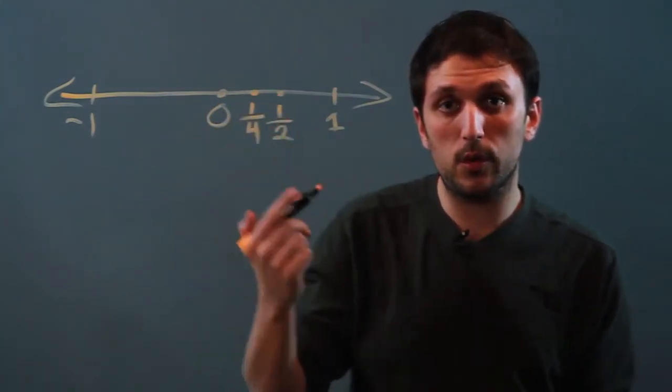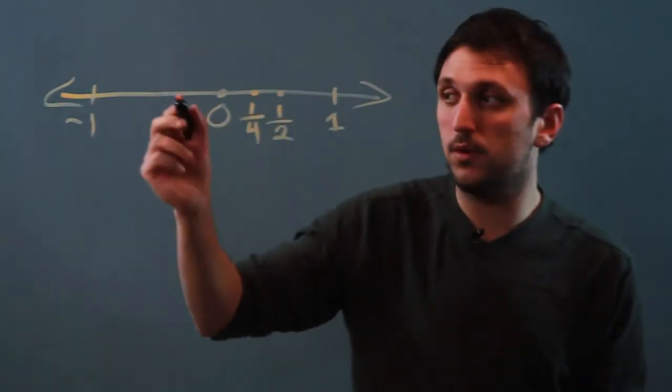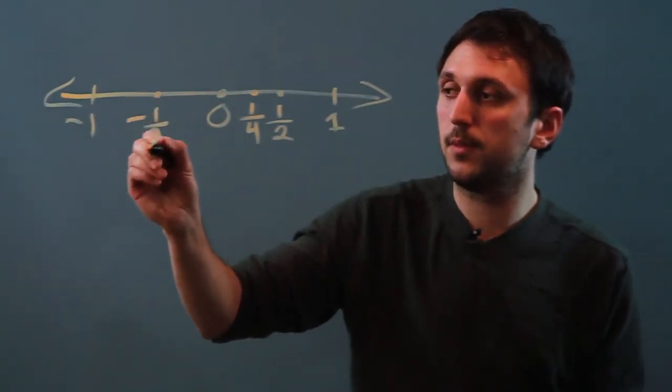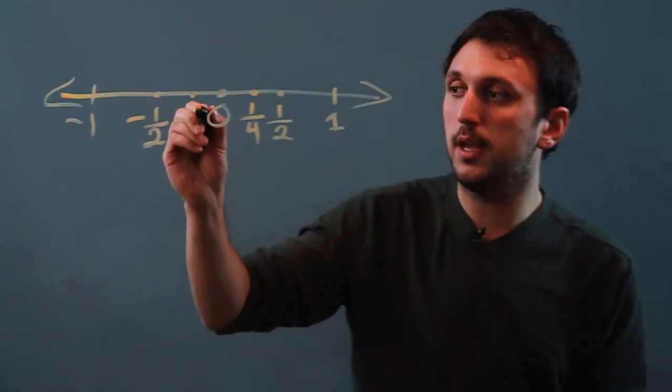Now, the other very important thing with a number line is with negative numbers. Here is negative one half, and here is negative one fourth.